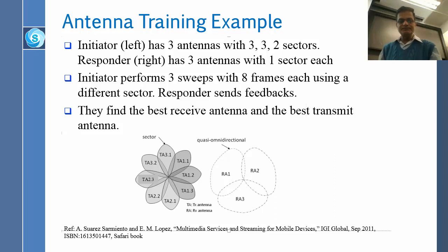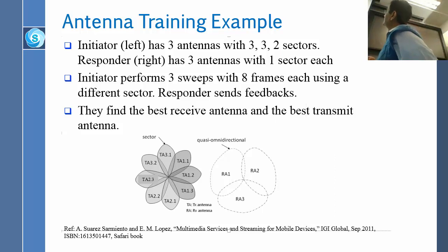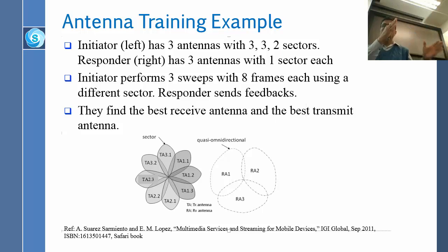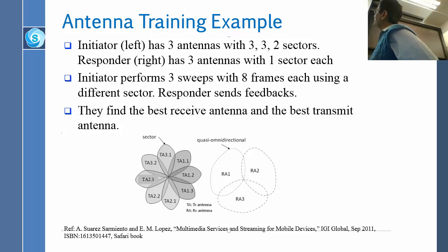Here is another example. The initiator on the left has three antennas with three, three, and two sectors respectively. Notice: the first antenna has three sectors — 1.1, 1.2, and 1.3. One antenna can cover three sectors. The second antenna has three sectors: 2.1, 2.2, 2.3. The third antenna has only two sectors: 3.1 and 3.2.